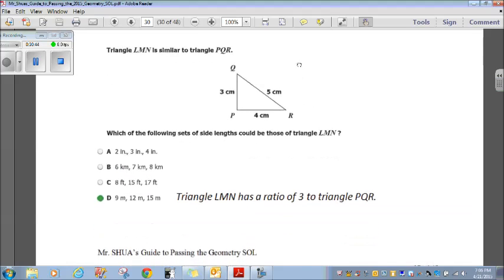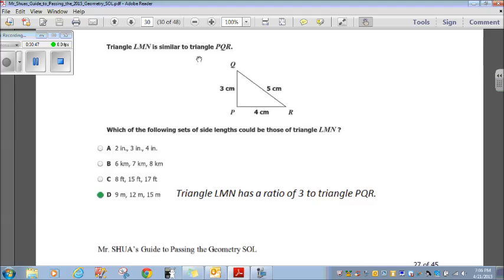Okay. Triangle LMN is similar to triangle PQR. Which of the following side lengths could be those of triangle LMN? Okay. So, PQR, we see it's in a 3, 4, 5 ratio. So, I want to look for anything that looks similar or complements the 3, 4, 5 ratio. And out of these four choices, choice D complements that. Because if you look at choice D, 9, 12, and 15, well, 3 times 3 is 9. 3 times 4 is 12. 3 times 5 is 15. It's a ratio of 3. That one was pretty easy. All right. Let's go on to the next question.